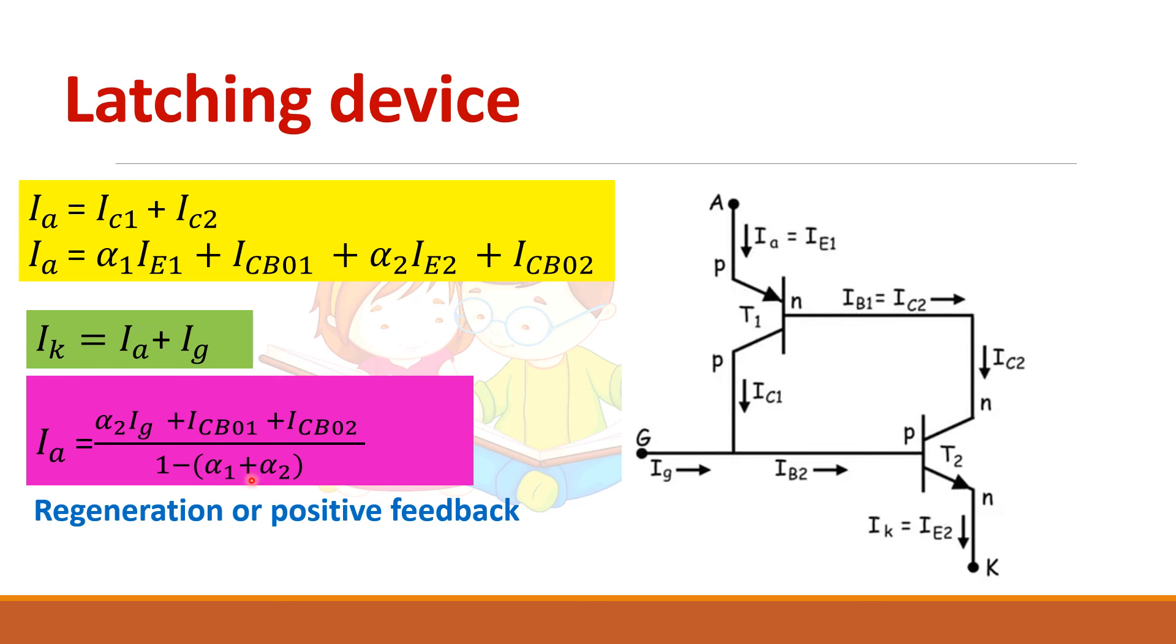So this alpha 1 and alpha 2 will be increasing continuously and at one state it reaches 1. So when it reaches 1, this anode current becomes infinite, meaning that SCR has gone into conduction.